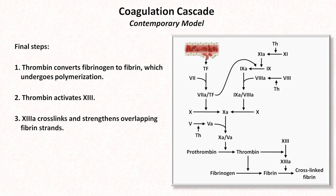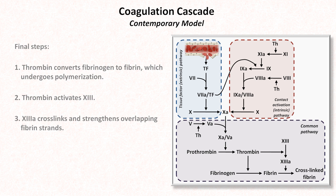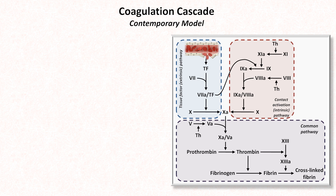Referring back to the traditional model of coagulation, although it has some limitations, the traditionally described extrinsic pathway, also known as the tissue factor pathway, incorporates these steps. The intrinsic pathway, also known as the contact activation pathway, incorporates these steps. And the so-called common pathway includes everything that's left. Several factors have been historically included in the coagulation cascade — specifically the intrinsic pathway upstream of factor 11, including factor 12, kallikrein, and high molecular weight kininogen — but are not listed here because defects of these proteins do not result in a clinically apparent clotting disorder, raising doubt that they play any significant role in actual physiology.